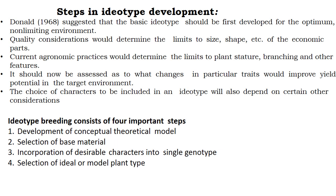Regarding steps in idiotype development: Donald in 1968 suggested a basic idiotype should first be developed for the optimum non-limiting environment. Quality considerations determine the limit of size and shape of economic parts; current agronomic practices determine limits of plant structure and branching. The four important steps in idiotype development are: development of a conceptual or theoretical model, selection of base material, incorporation of desirable characters into a single genotype, and selection of the ideal or model plant type.